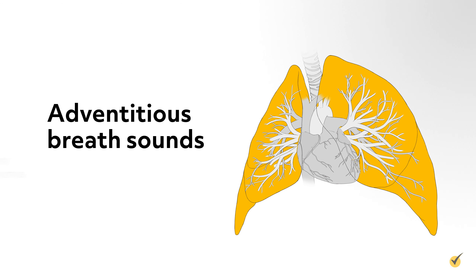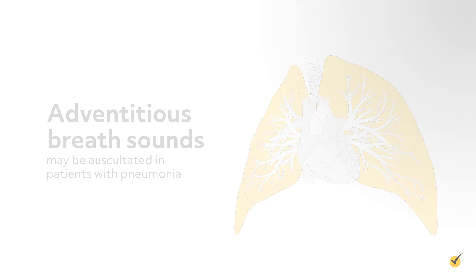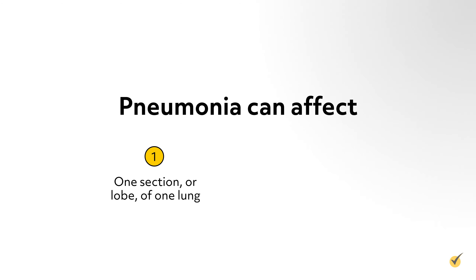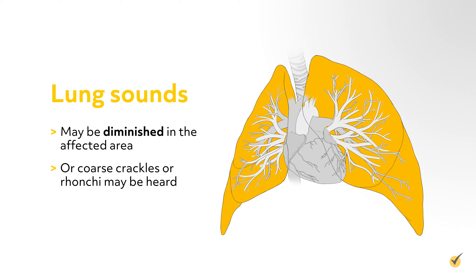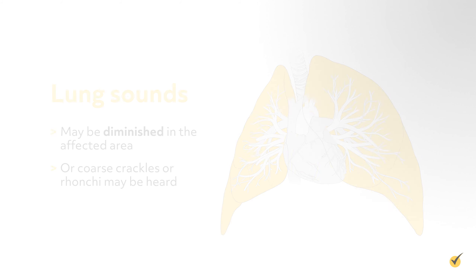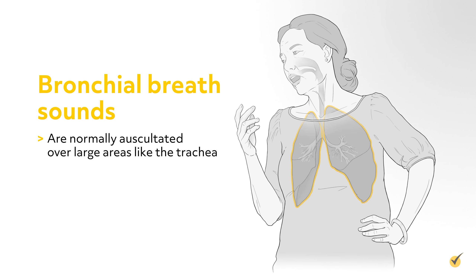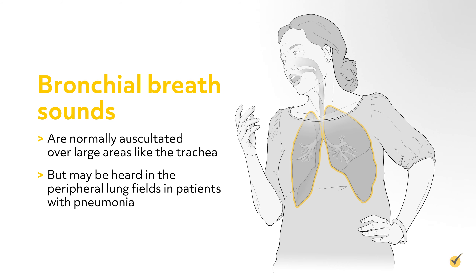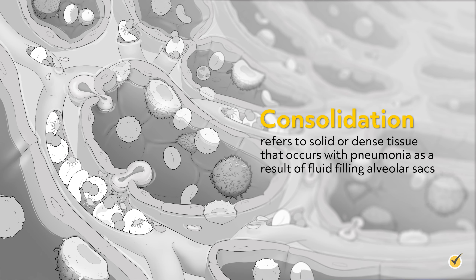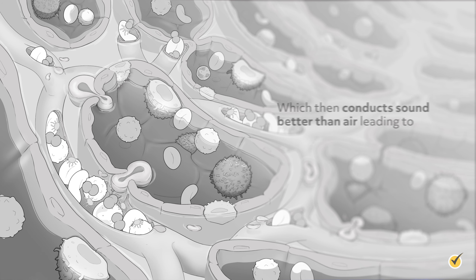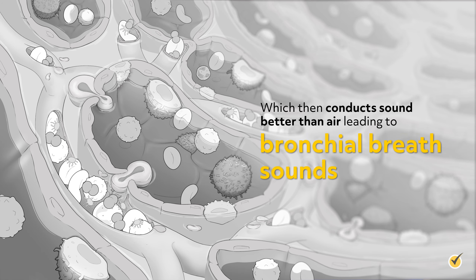Adventitious breath sounds may be auscultated in patients with pneumonia. Pneumonia can affect just one section or lobe of one lung, or multiple lobes of one or both lungs. Lung sounds may be diminished in the affected area, or coarse crackles or ronchi may be heard. Bronchial breath sounds, normally auscultated over large areas like the trachea, may be heard in the peripheral lung fields. Consolidation refers to solid or dense tissue resulting from fluid-filled alveolar sacs, which conduct sound better than air, leading to bronchial breath sounds.